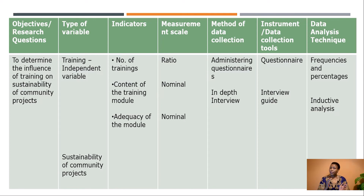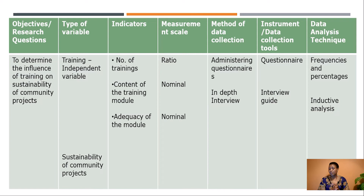Looking at the independent variable, from the conceptual framework three indicators were identified: the first was number of trainings, the second was content of the training, and the third was adequacy of the training module. For the measurement scale, number of trainings is ratio, while content and adequacy are nominal. What are the methods to be used? For number of trainings, we shall administer a questionnaire; to determine the content and adequacy, we will use an interview guide.